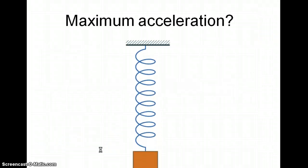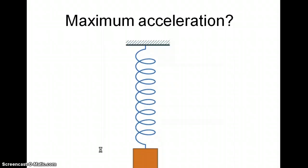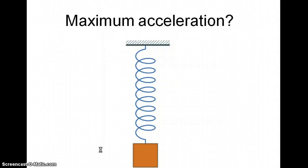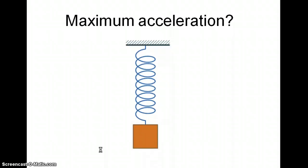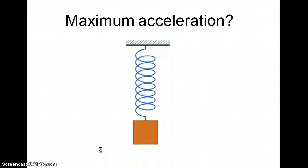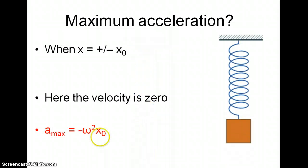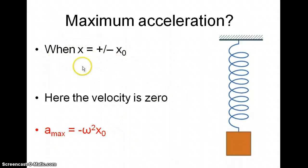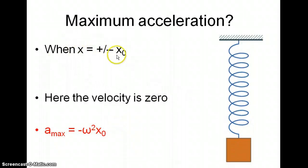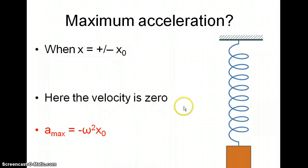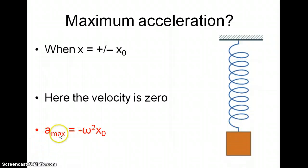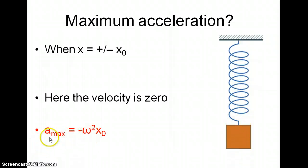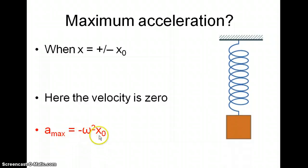Where is the acceleration maximum? The acceleration — and the force — is maximum at the top or bottom of the motion. At the equilibrium position in the middle the force is zero, so the acceleration there is zero. We have maximum acceleration when x equals plus or minus x₀, and at those points the velocity is zero. Using a equals minus omega squared x, the maximum acceleration is minus omega squared times x₀.